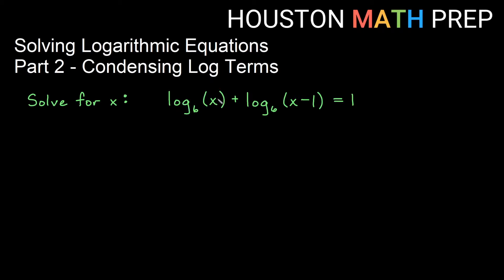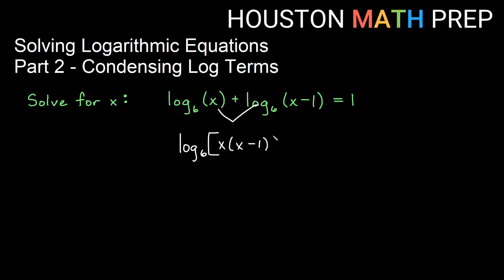For our first problem we have log base 6 of x plus log base 6 of x minus 1 equals 1. We have the same base in two separate logs, so we should be able to combine them. A property of logs is when we have two separate logs of the same base with addition between them, we can combine those into a single log and multiply what's inside. So we condense into log base 6 of x times (x minus 1), equal to 1.